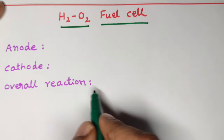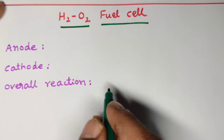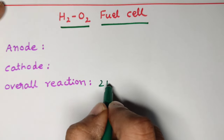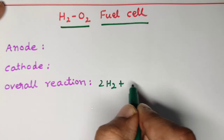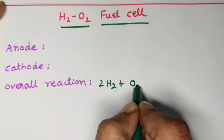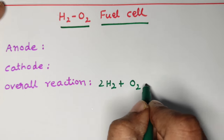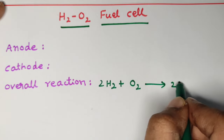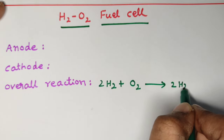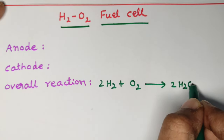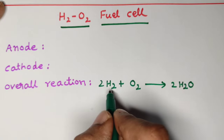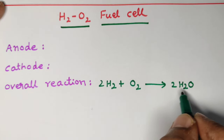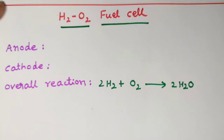First, let us take the overall reaction: two moles of H₂ plus one mole of O₂ will give rise to two moles of water. This familiar reaction is written as 2H₂ + O₂ → 2H₂O.